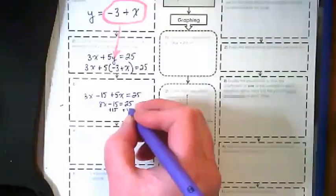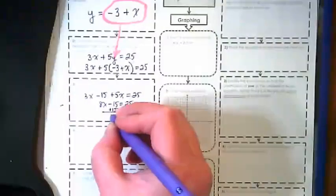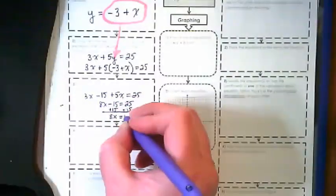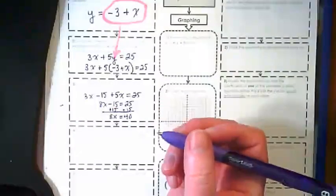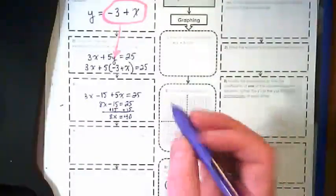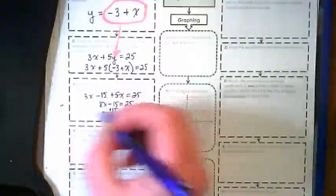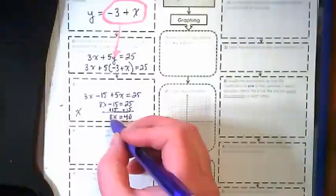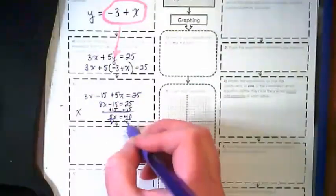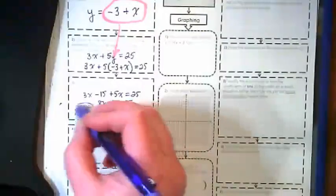We're going to add 15 to both sides, and we get 8x is equal to 40. Dividing both sides by 8, we get x is equal to 5.